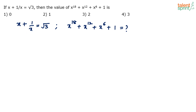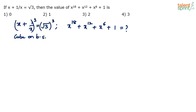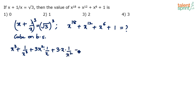What we'll try to do is cube this equation on both sides. So, x plus 1 by x whole cube equals root 3 whole cube. Using the (a + b)³ identity: a³ + b³ + 3a²b + 3ab². This gives x cube plus 1 by x cube plus 3x squared into 1 by x plus 3x into 1 by x squared, equal to root 3 whole cube. Root 3 whole cube is root 3 times root 3 times root 3, which equals 3 root 3.